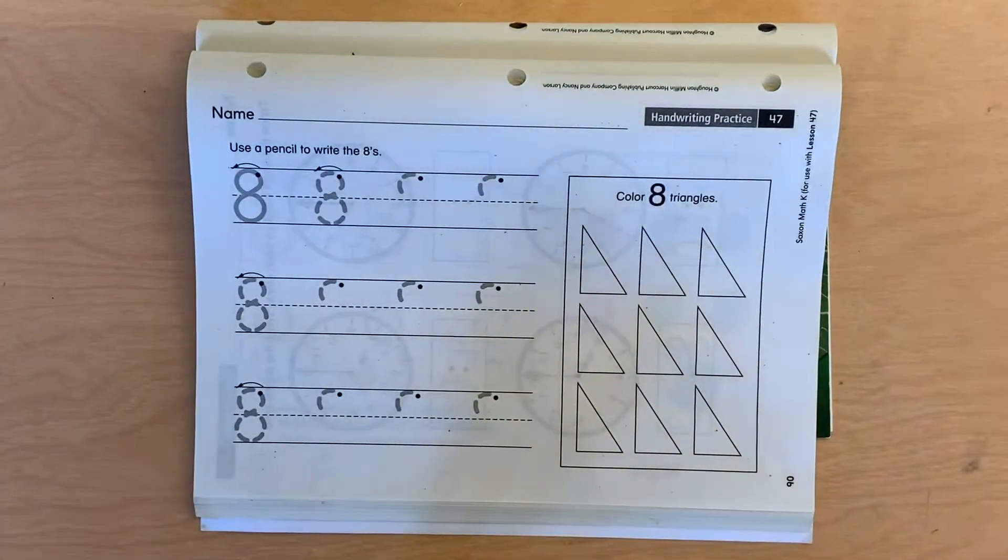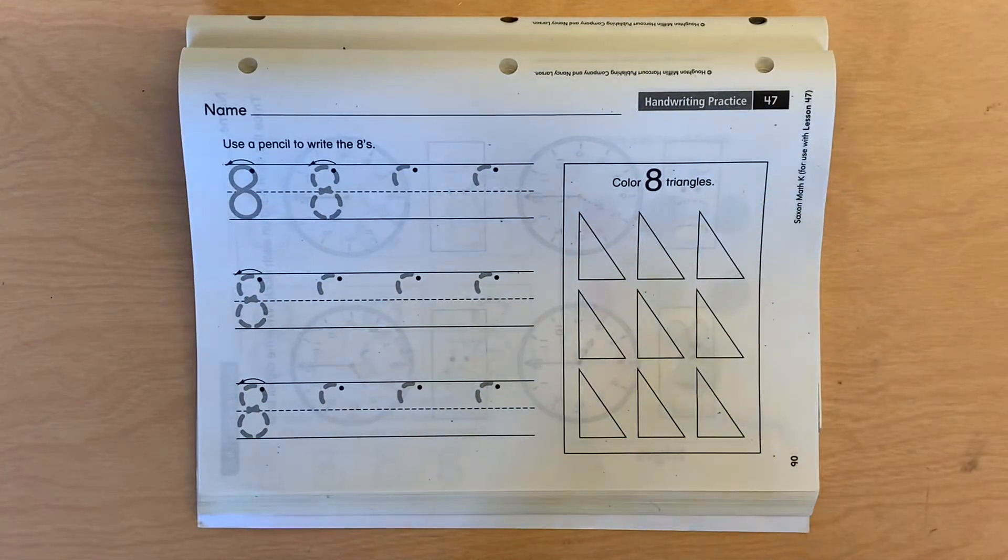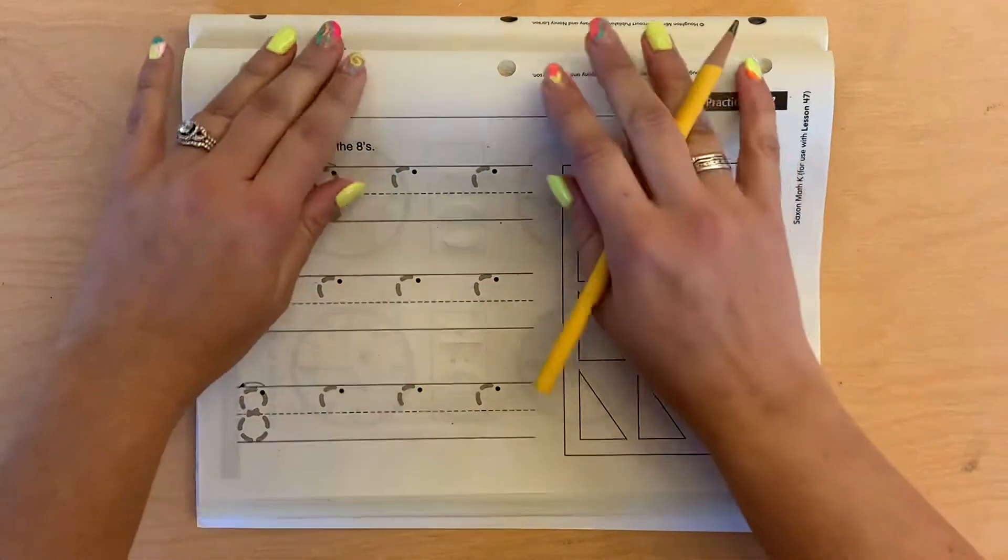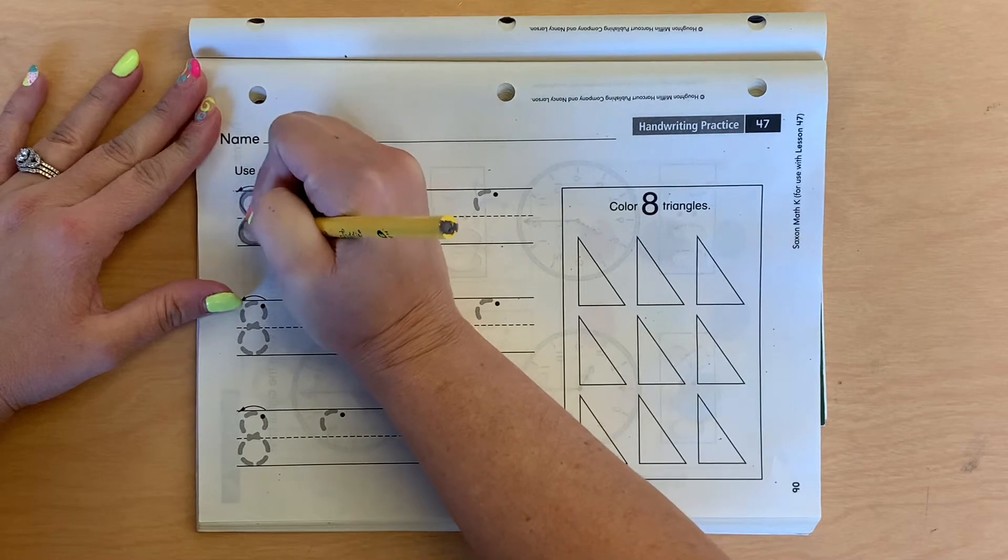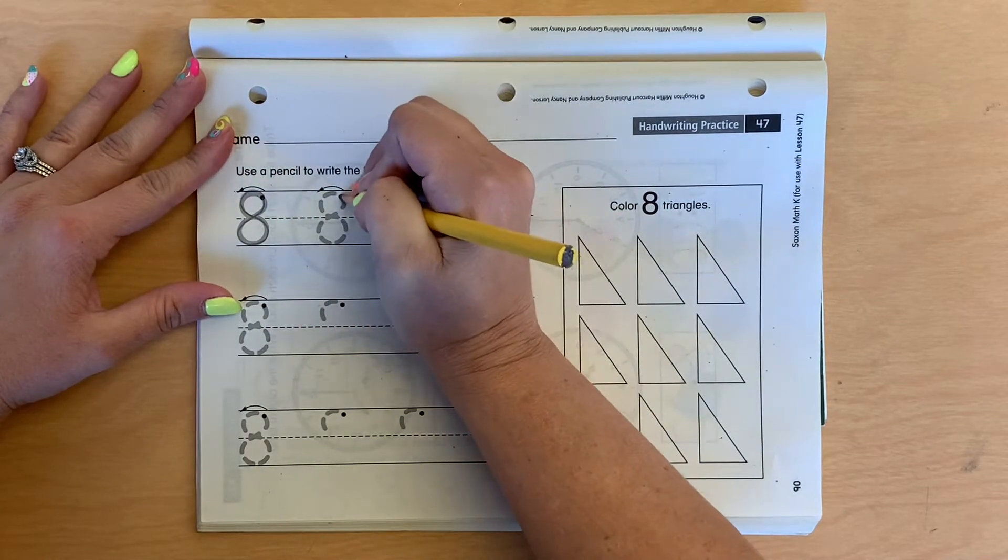Alright, we're going to practice 8 today. Flip your page. So 8 rhyme goes, make an S and go back home. So we start at the dot, we're going to make an S, and then we're going to go back home, back to the dot.